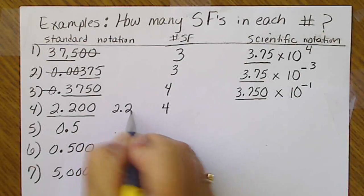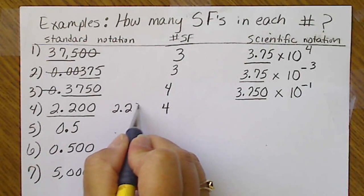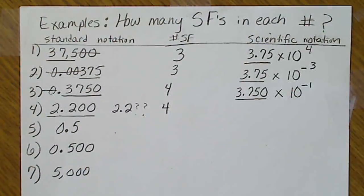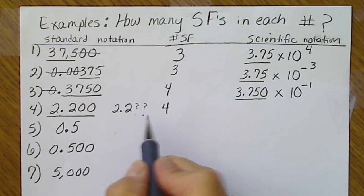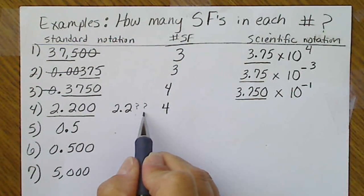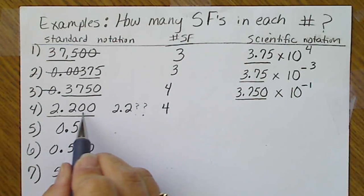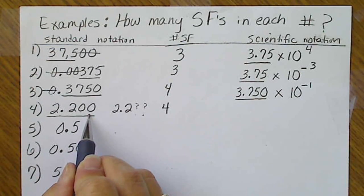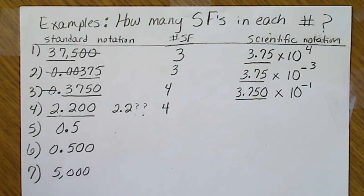2.2 is the same numerical value, but we would see that we don't have any values there. So when we do have zeros at the end of a number, when there's a decimal present, those always are counted as significant.